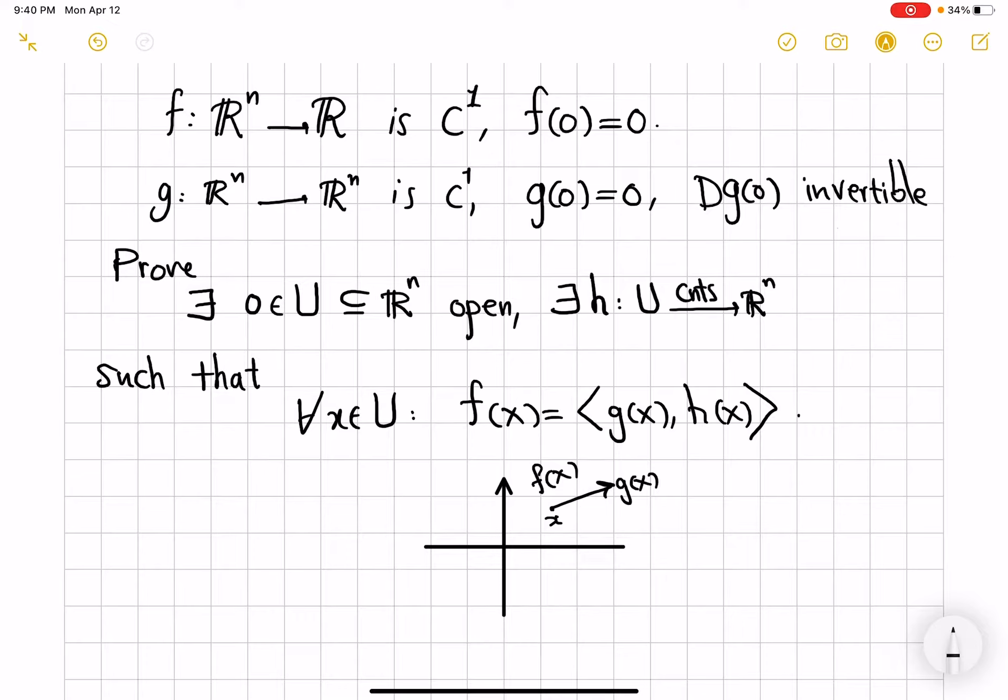The claim is that on a neighborhood of 0, you can find a new vector field, h of x, such that f, the scalar quantity, comes from dot product of g and h at every point of your neighborhood U.